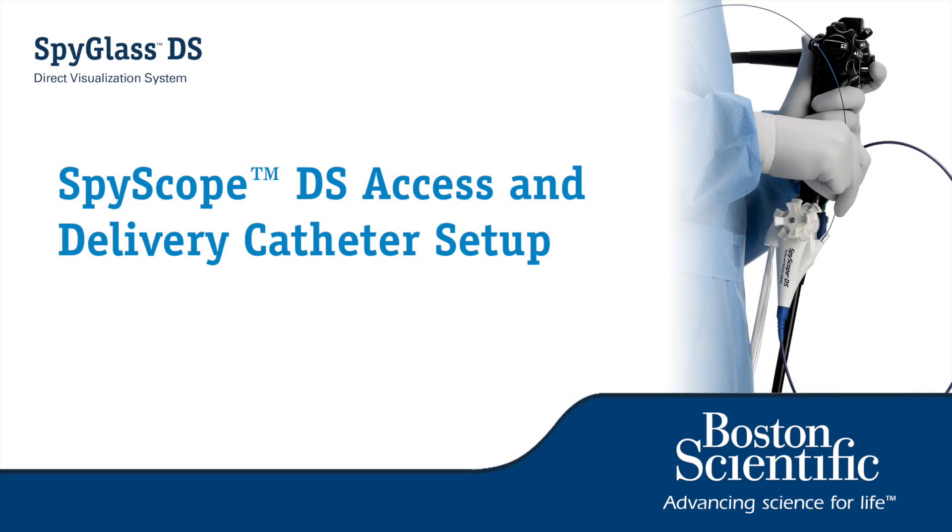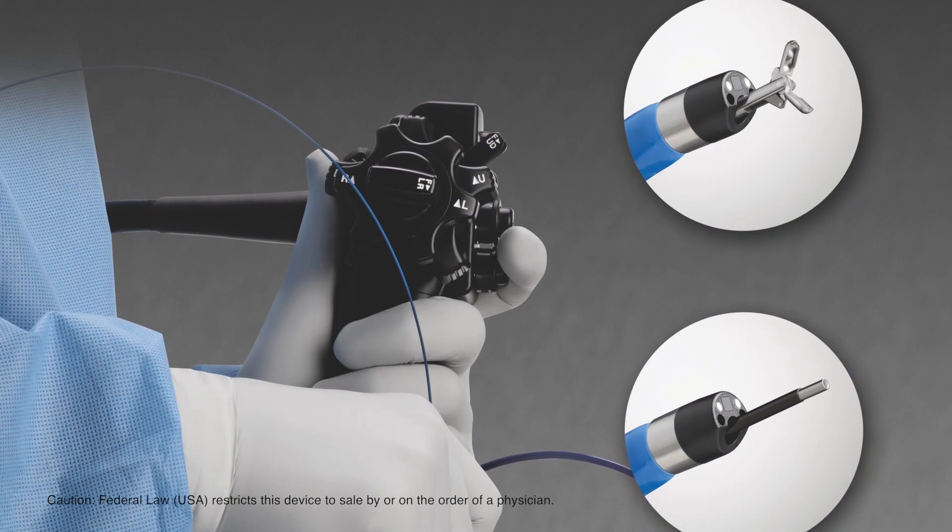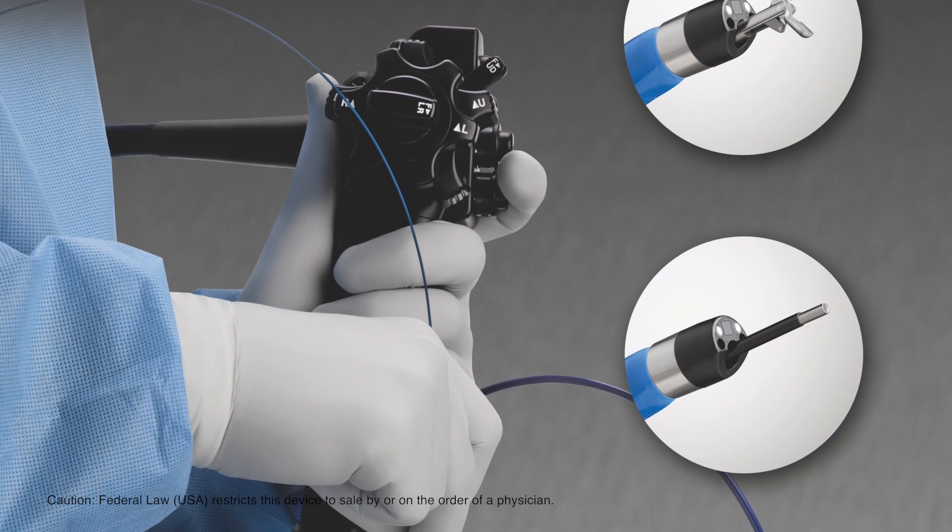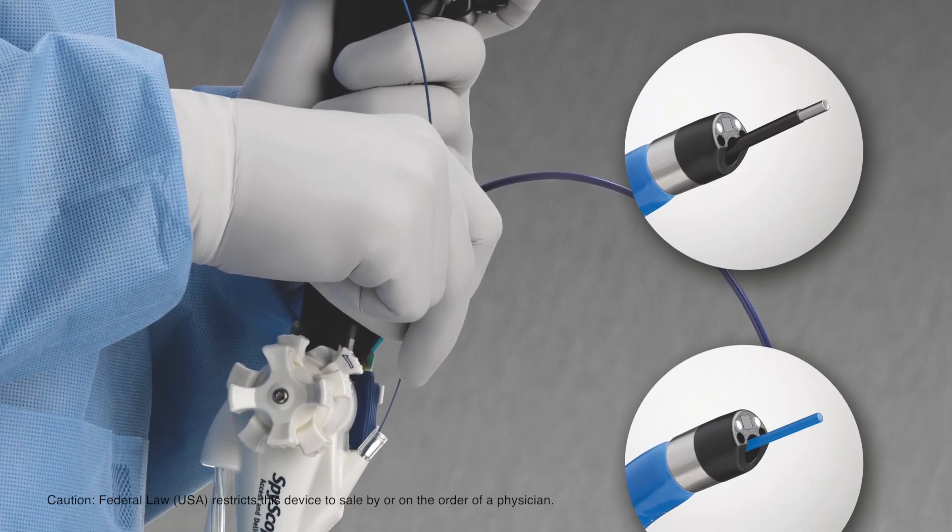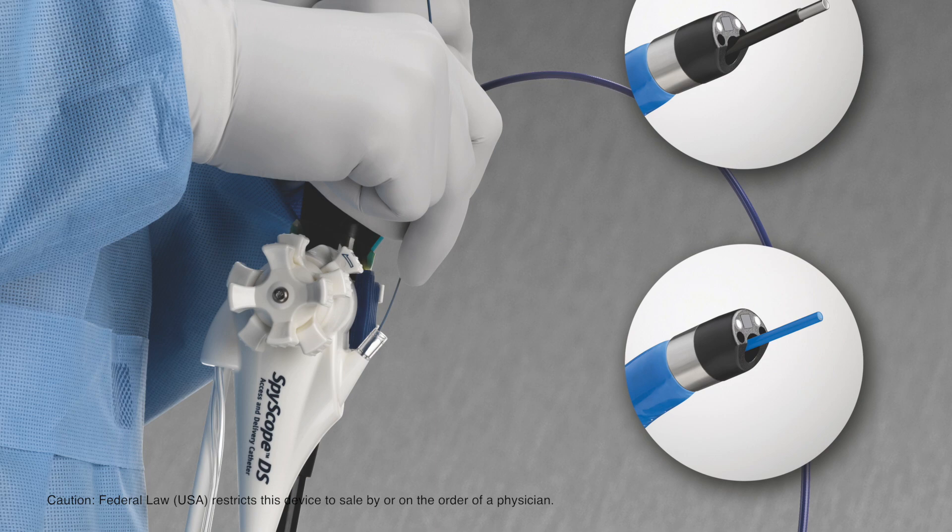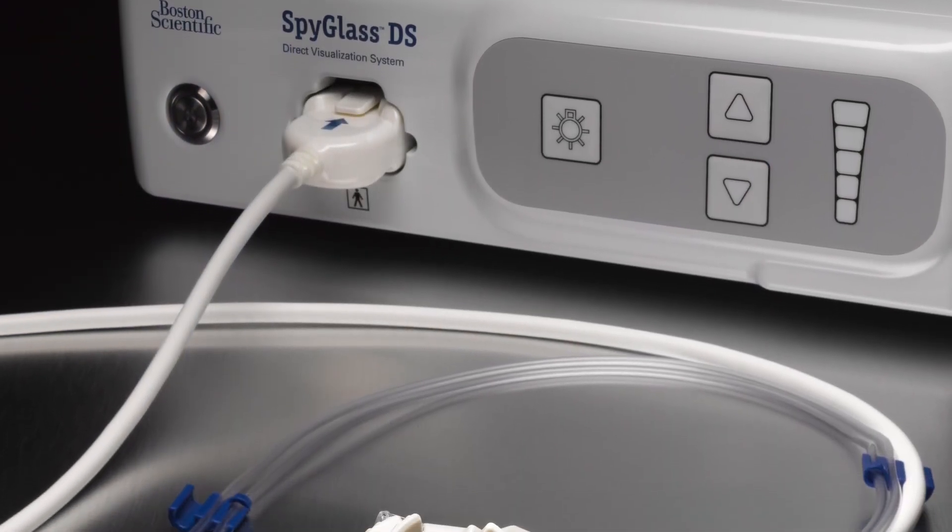The Spyscope DS Access and Delivery Catheter is a sterile, single-use endoscope intended to provide direct visualization and to guide both optical and accessory devices for diagnostic and therapeutic applications.